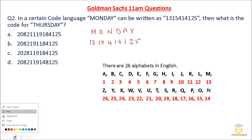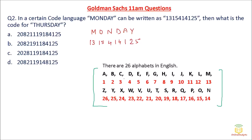Let us analyze how this code is written. There are 26 alphabets in English; A is position 1, B is 2, C is 3, and so on. For 'Monday': M's code is 13, O's code is 15. But N's code is 14 and D's code is 4 — here the middle letters have been exchanged. So D (4) and N (14) are swapped. Then A's code is 1 and Y's code is 25.